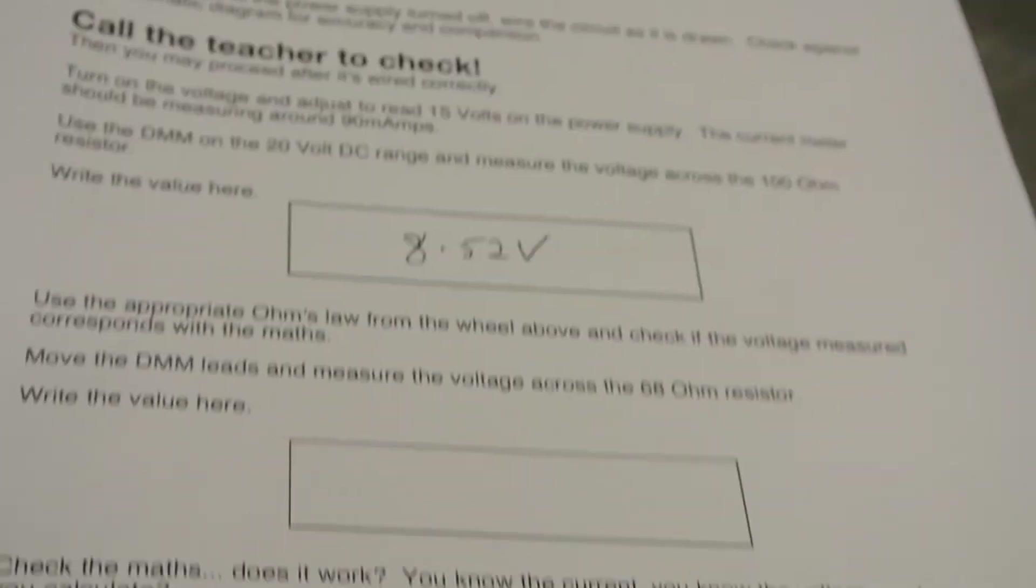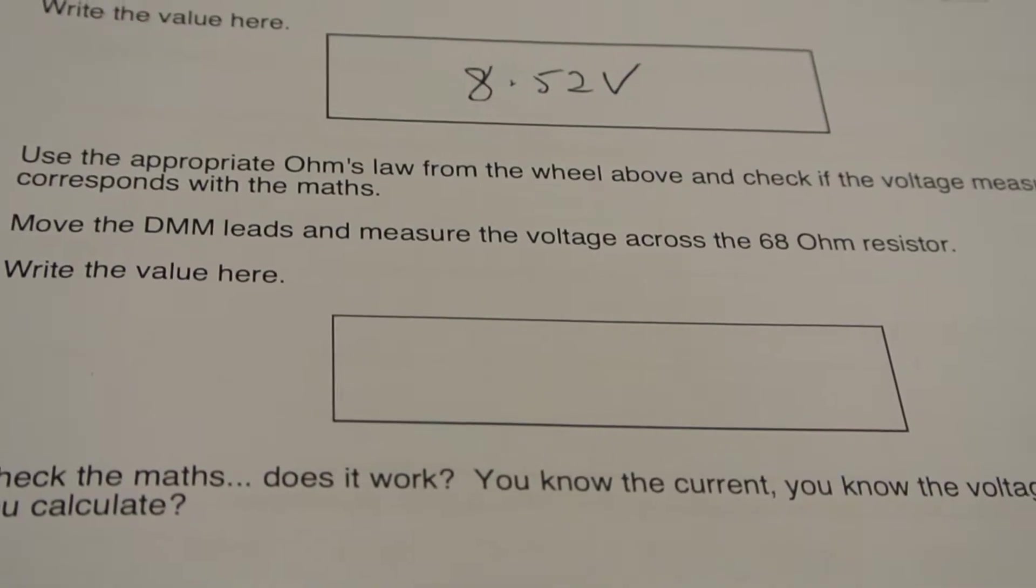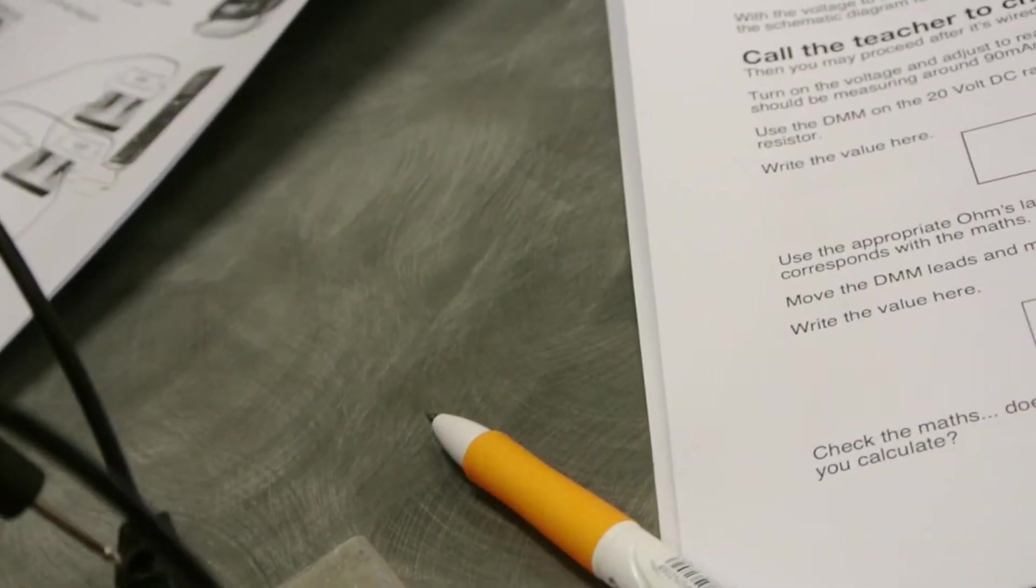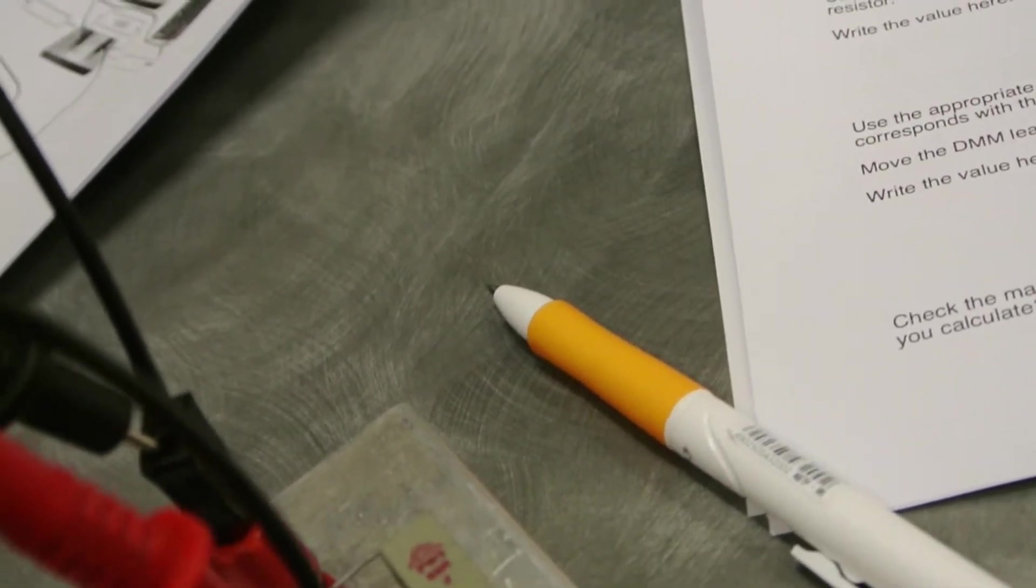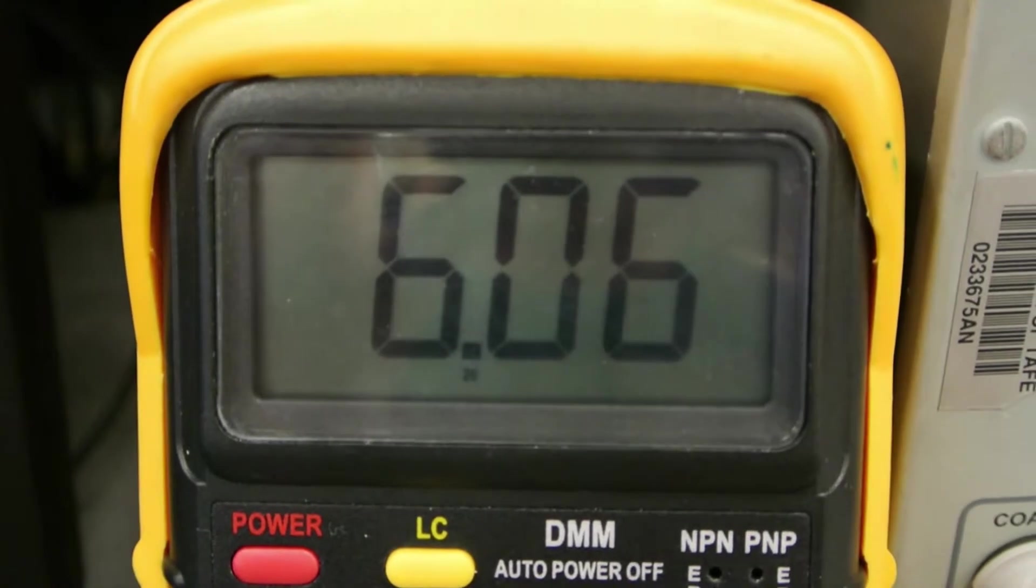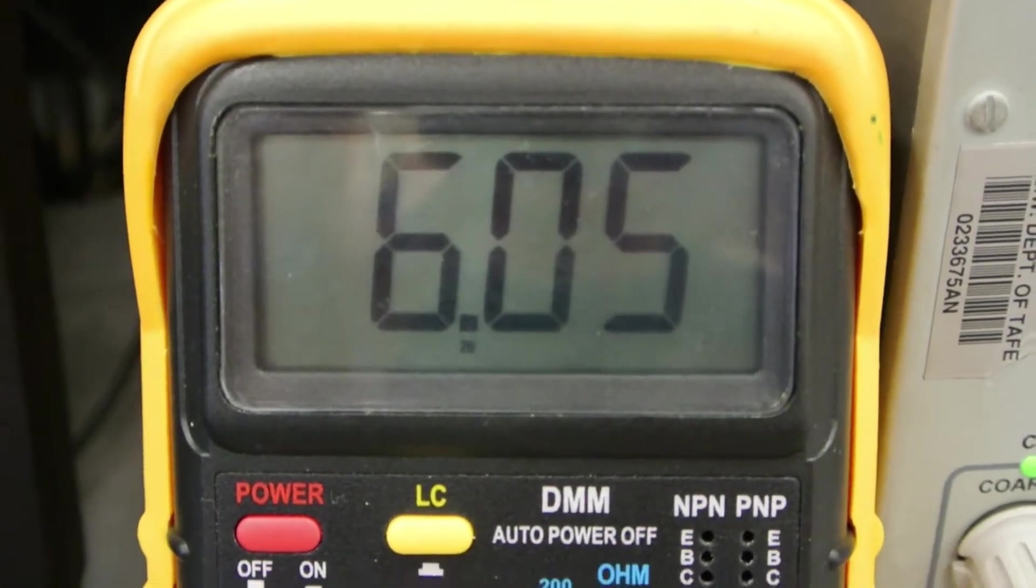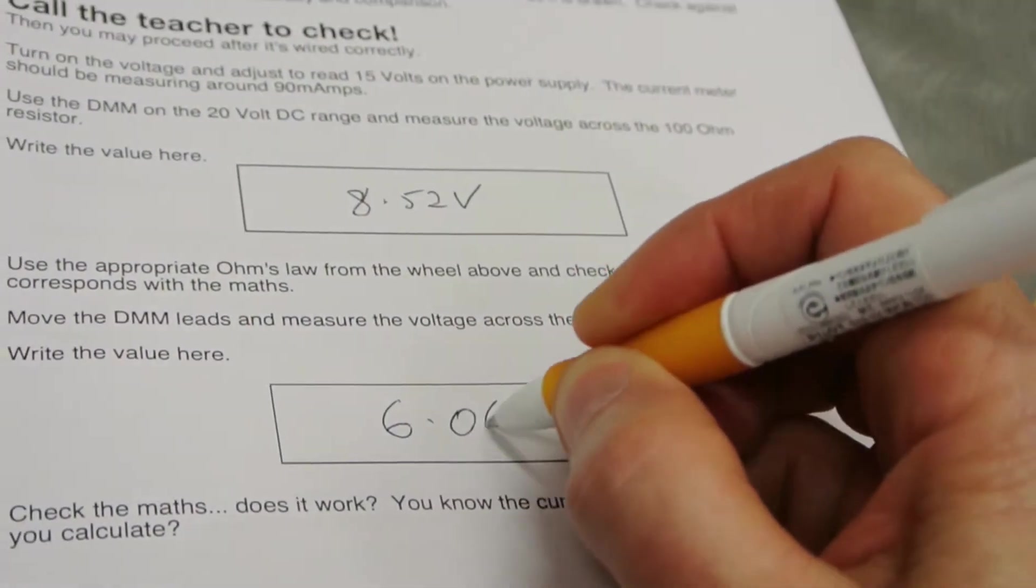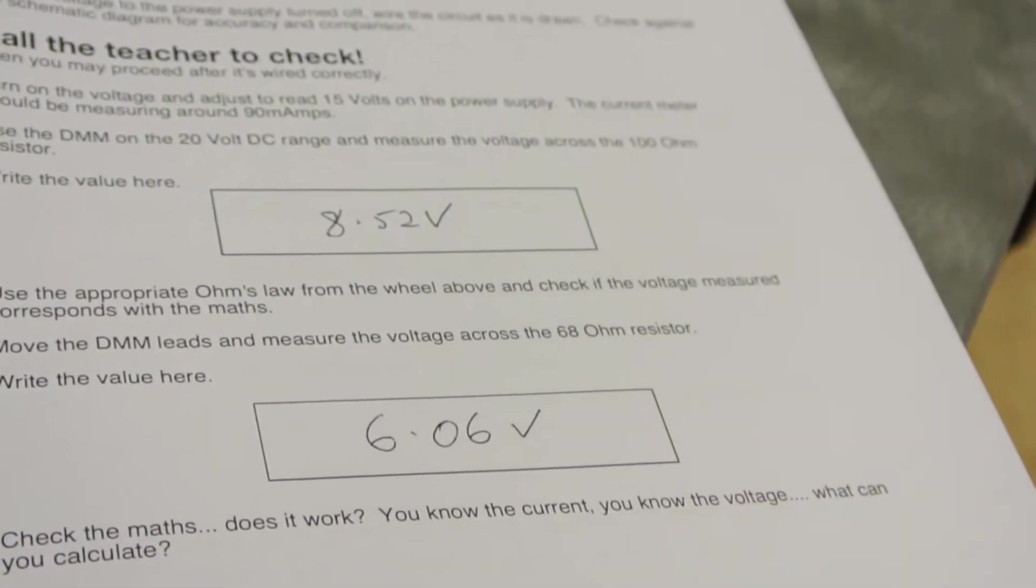The second part of the lab asks us to measure the voltage across the 68-ohm resistor. Let's go ahead and do that. We've got 6.06 volts. So I'll write that into the appropriate box here.